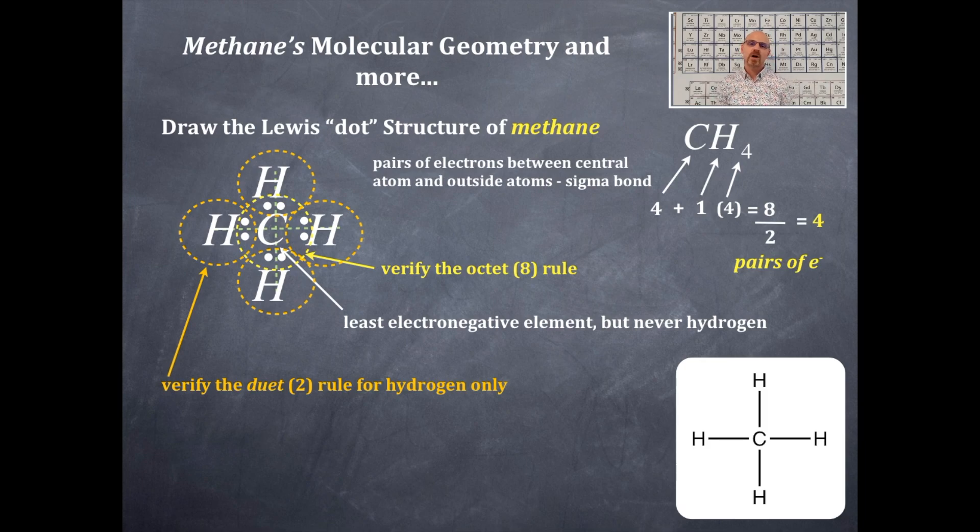Generally, when you have bonding pairs of electrons, you'll draw a single line instead. Therefore, that C in the middle and the hydrogens on the outside—that's a perfect Lewis dot structure.